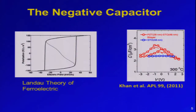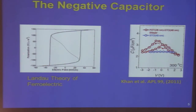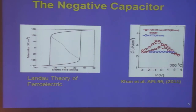Let's look at the negative capacitance. This is the Landau theory of the ferroelectric — polarization versus electric field. When we increase the electric field, the polarization changes, going up in the experiment one way and then the other when the field is reversed. The theory predicts there is actually a negative-slope branch, but experimentally it is not stable and is very difficult to measure.